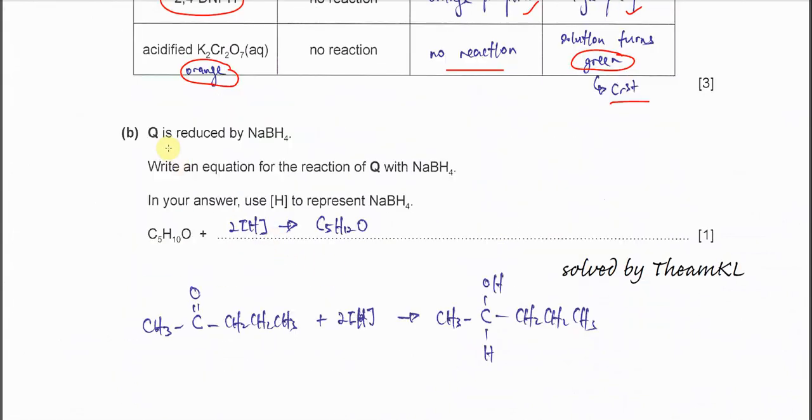Part B. Q is reduced by the sodium borohydride. This is Q. When it's reduced, it just adds two hydrogen. Add one hydrogen here and add another hydrogen here. Then these pi bonds break. It will form this one. So the reduction of Q just needs to add two hydrogen. After that, form C5H11O, means this one, the secondary alcohol.